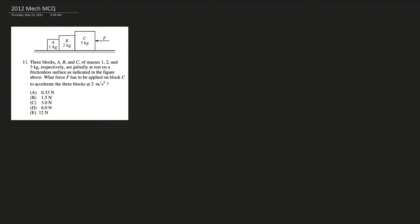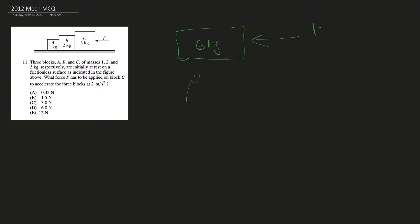Number eleven: three blocks A, B, C of masses 1, 2, and 3 kg are at rest on a frictionless surface. To find the force F needed to accelerate all three blocks at 2 m/s², treat them as one combined block. Total mass is 1+2+3 = 6 kg. Using F = ma: F equals 6 × 2 = 12 newtons.